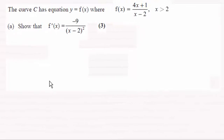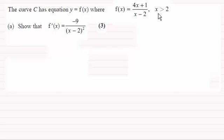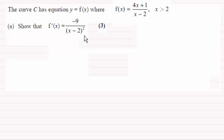Hi. For this question, we're given the equation y equals f of x, where f of x equals this expression for x greater than 2, and asked to find f dash x, or f prime x — the first differential of f of x. We need to show that it equals minus 9 all over x minus 2 squared.